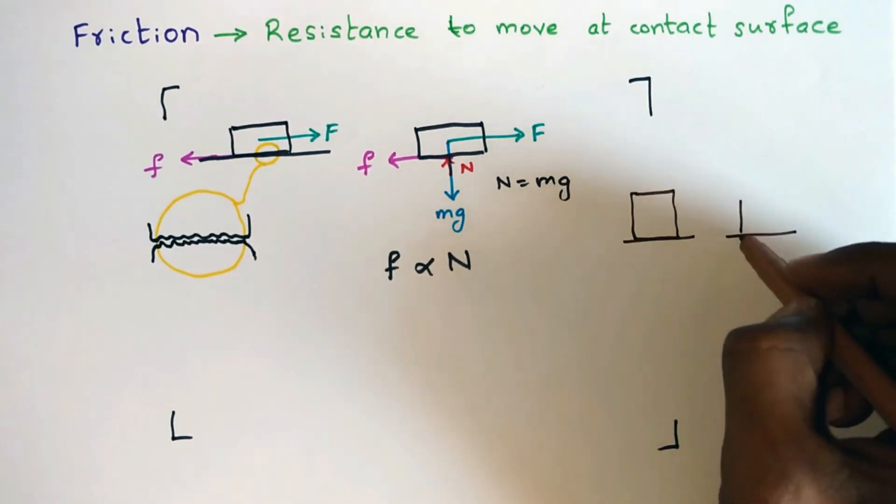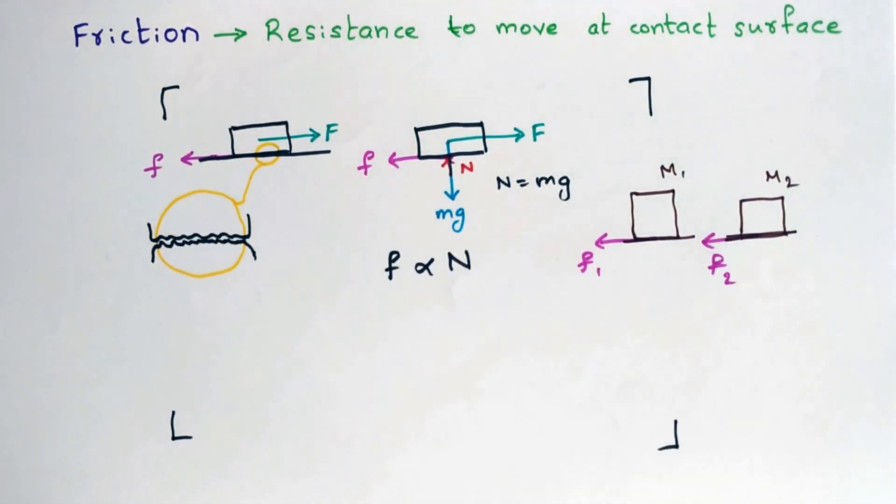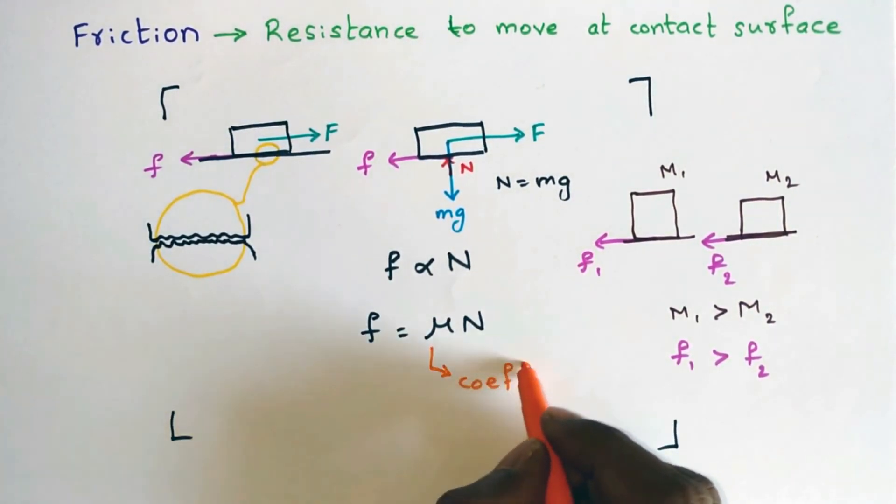So, for the same type of contact surface, heavier mass is going to have more friction than a lighter mass. And the proportionality can be replaced by a constant mu which is called as coefficient of friction.